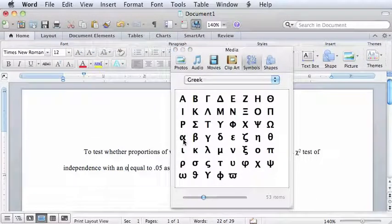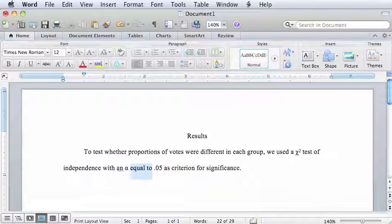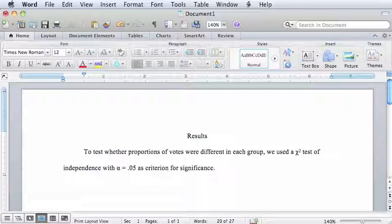Similarly, the word alpha can be replaced with the Greek letter, and the words equal to can be replaced by the mathematical operator. Math symbols are still words, so make sure to space around them as you would any other words.